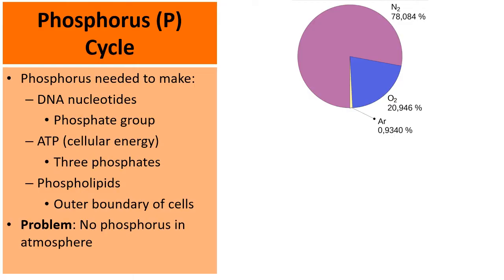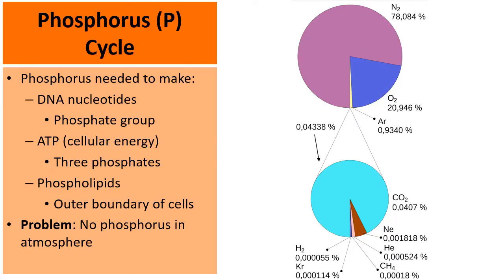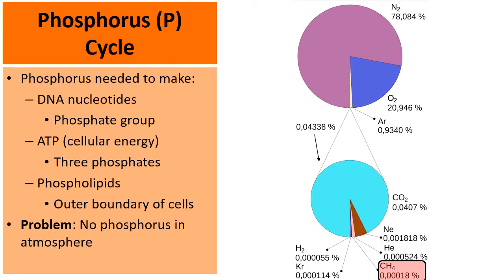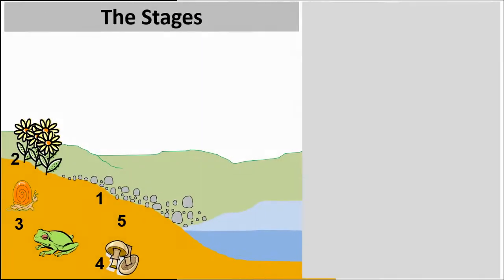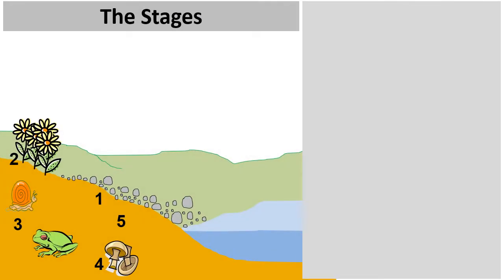There's no phosphorus in the atmosphere. Looking at this pie graph, we see about 78% nitrogen, about 21% oxygen, less than 1% argon, and if we zoom into the small wedge that's left, we see trace amounts of carbon dioxide, neon, helium, methane, hydrogen gas, and krypton — but there's no phosphorus in the atmosphere. So where do we get phosphorus from?